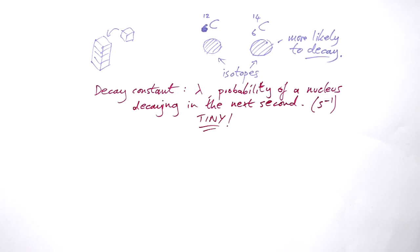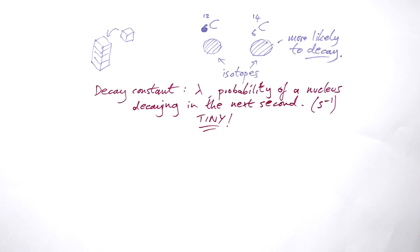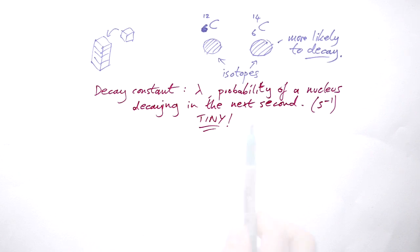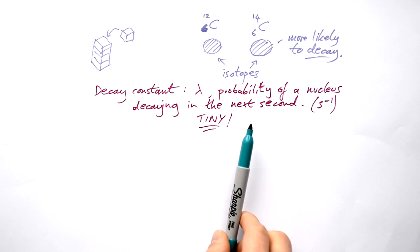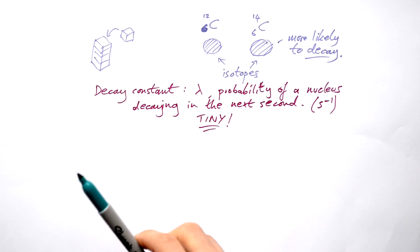This number's tiny though. It's very, very unlikely that if you're looking at an individual nucleus, it's going to decay in the next second. But if you've got enough of these nuclei, then chances are you will get some that will decay in the next second. We'll get on to how we can use this decay constant at A-level a little bit later.